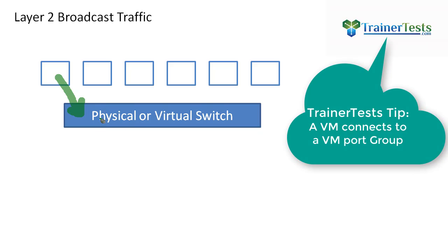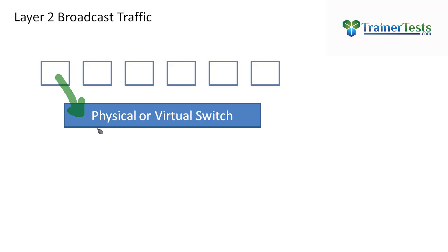Well, what the physical switch is going to do is it is going to receive that frame, take a look at the destination MAC, and the destination MAC address is a Layer 2 Broadcast address. So it will then forward that frame out every single port on that switch, and every single machine will receive a copy.